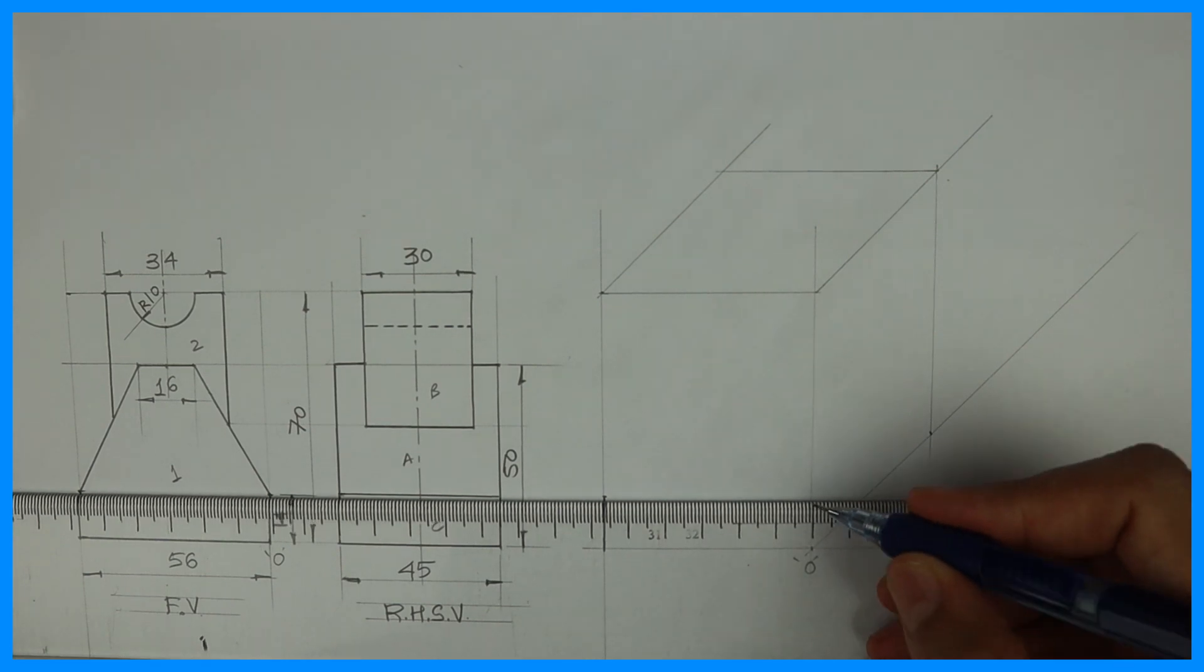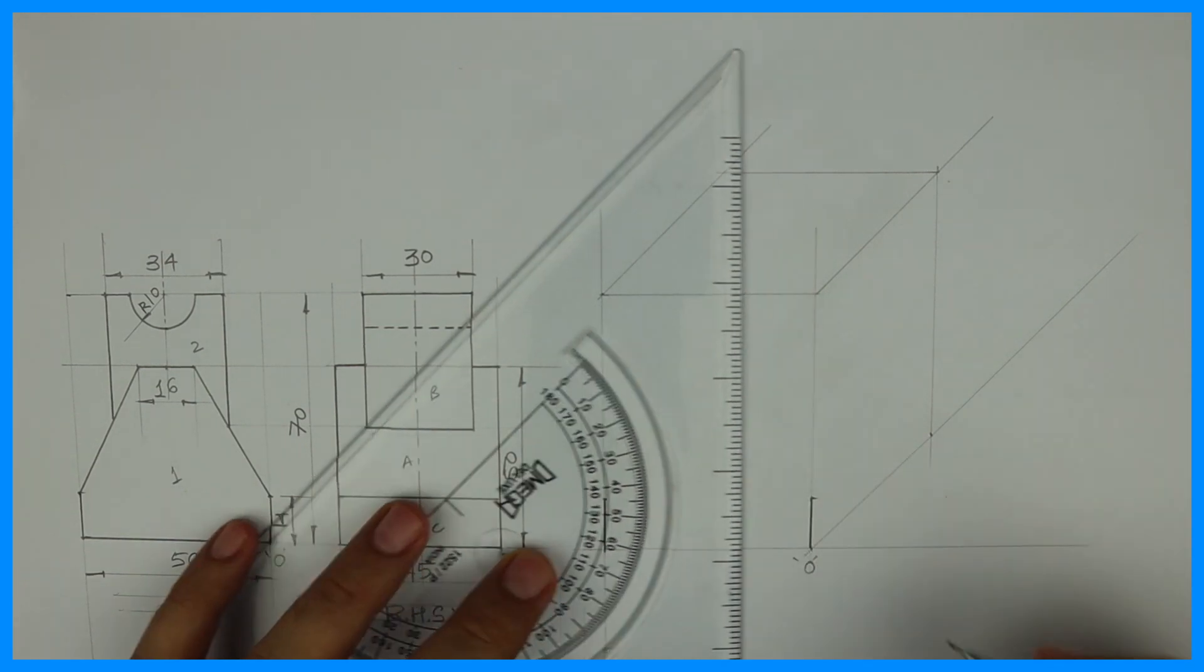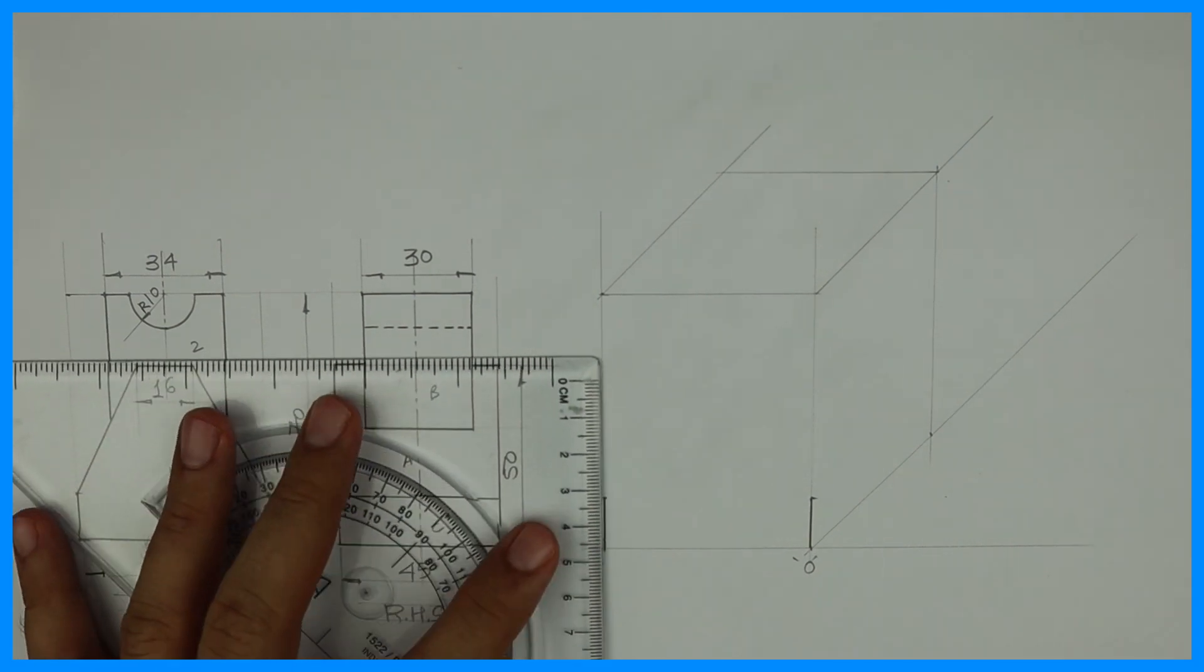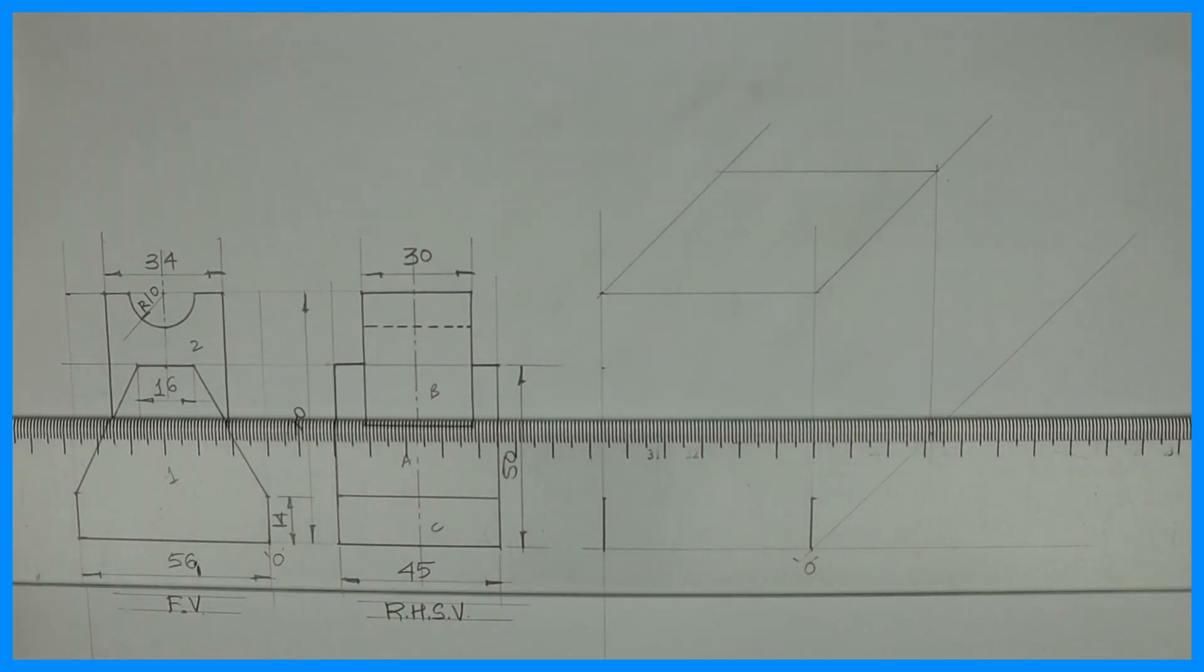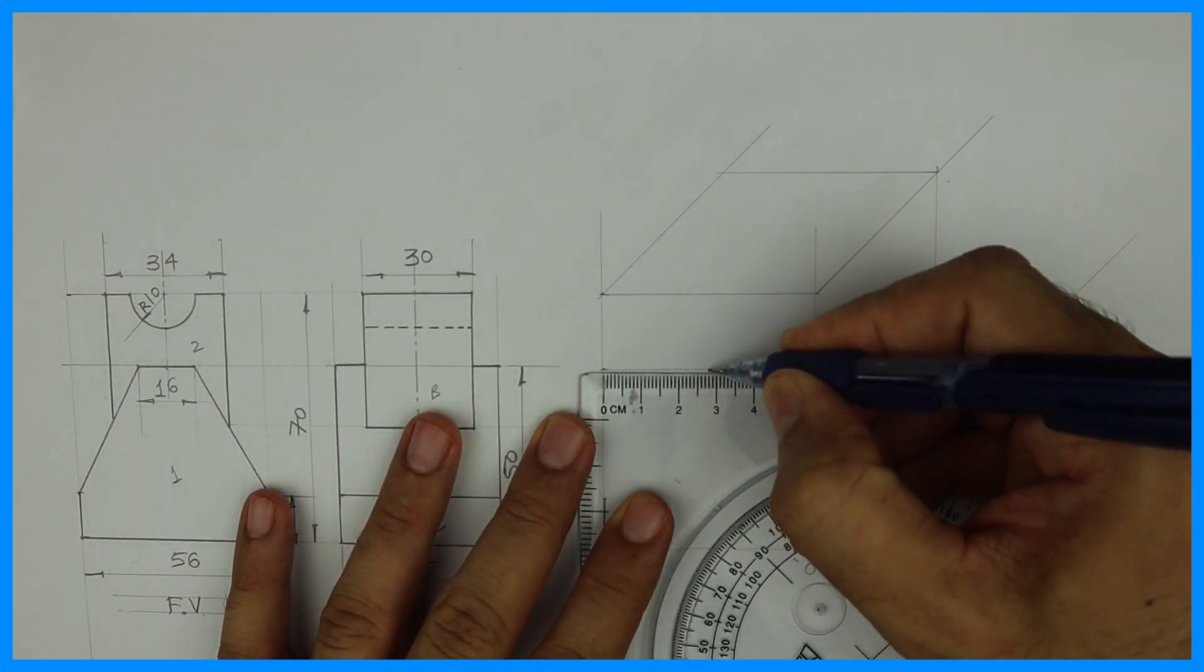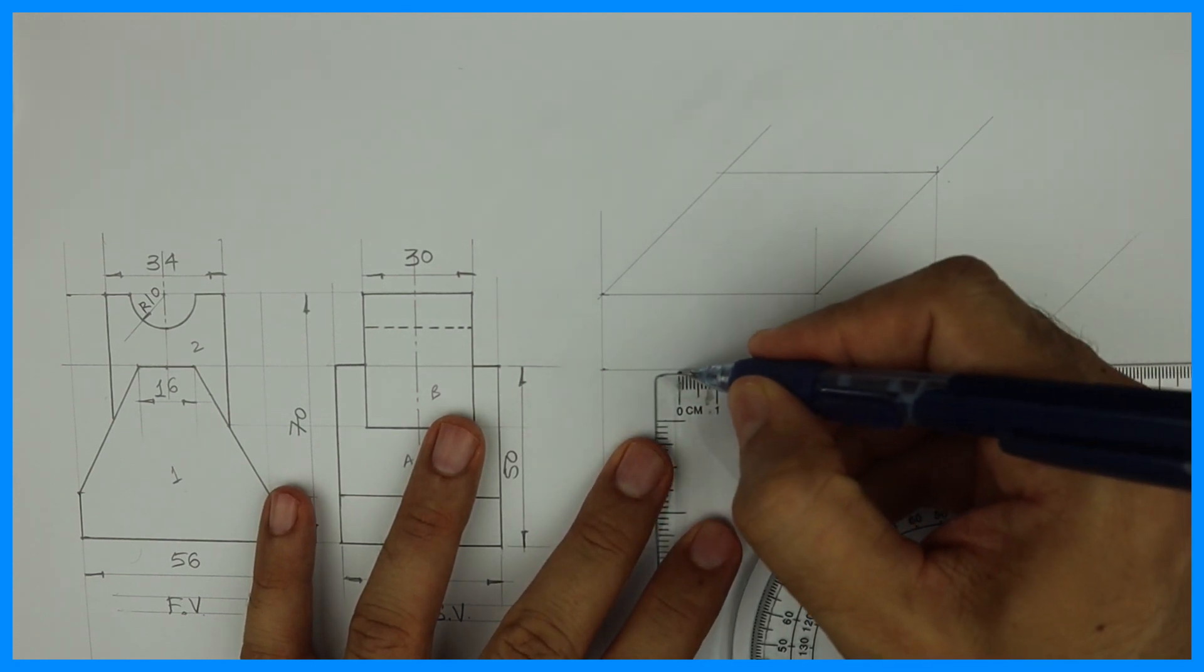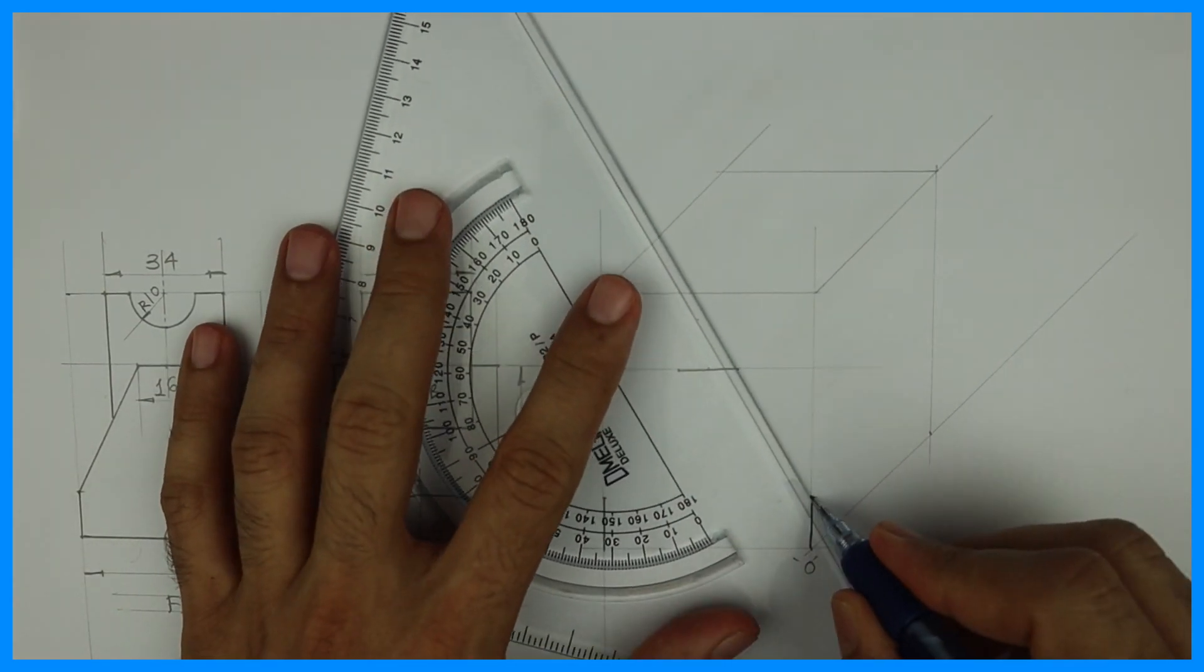So we'll take 14 on both the sides. Then we'll take height 50. Then you take midpoint and cut 88 on both the sides.